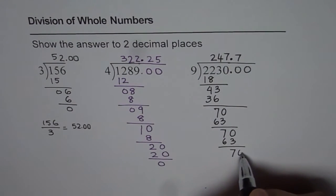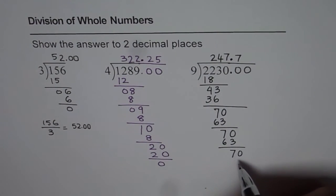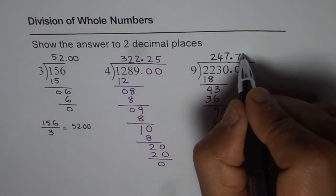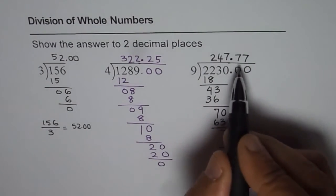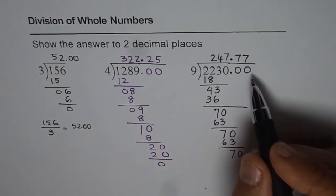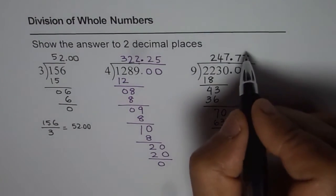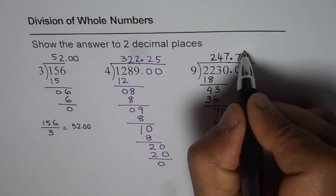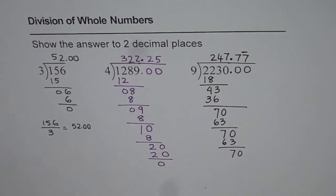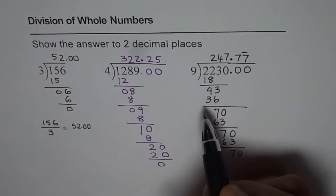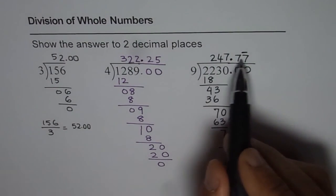So what you see is that 70 is getting repeated. So here you get 7, it repeats. So sometimes you can get answers which repeat. Now here you could write a small bar on top of it which shows 7 repeats. But we have to write only to 2 decimal places.